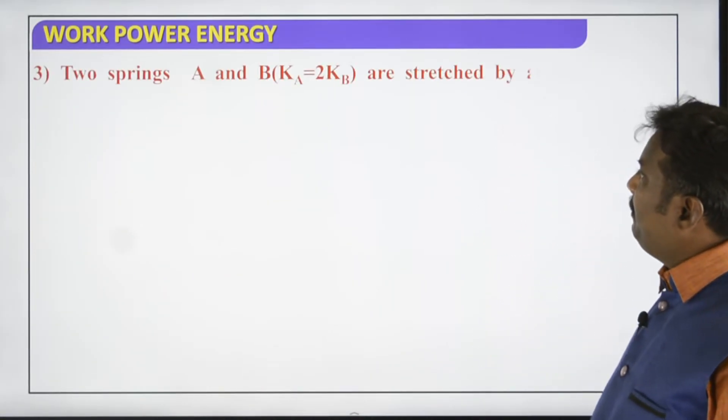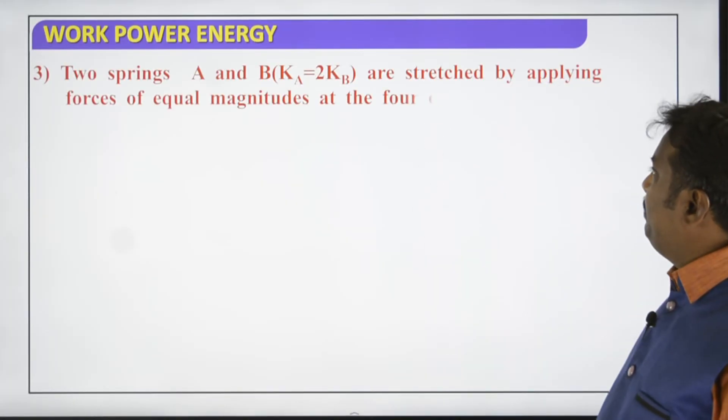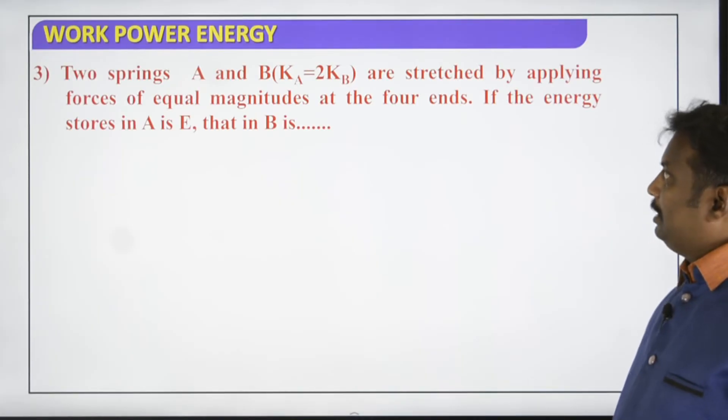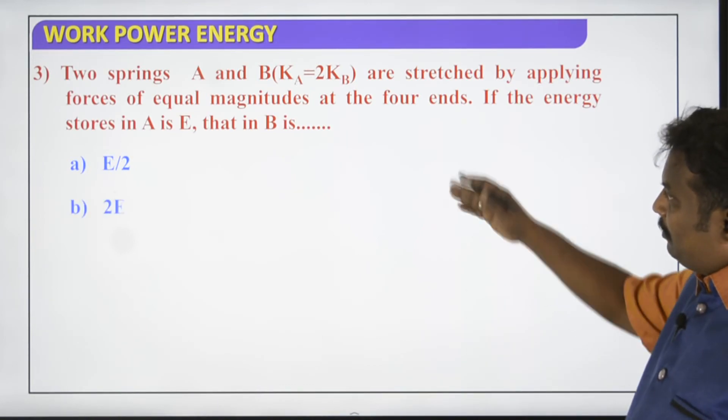I think on the two springs A and B. So KA is twice KB. KA is twice KB are stretched by applying forces of equal magnitude at the four ends. If the energy stored in A is E, then the energy stored in B is, of course,